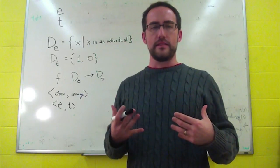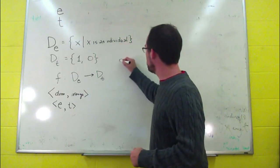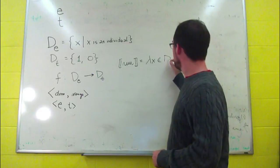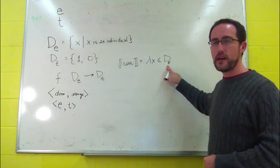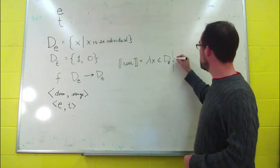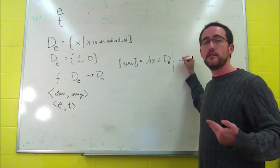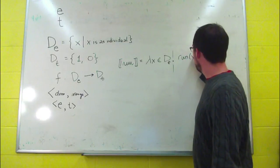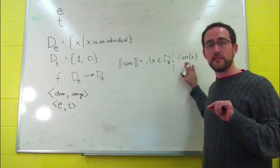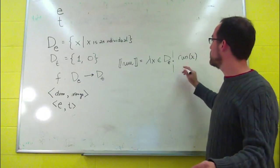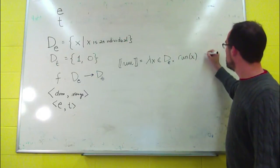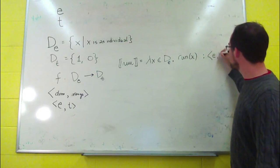If you look at an example like the verb 'run' — it is a function from the domain of individuals, so it takes something of type E, and it gives you something of type T. We say run of X, and remember that is an abbreviation: it's an abbreviation of 1 if X runs, 0 if X doesn't — 1 or 0, the truth values. So this will be of type T, and this function is of type ET.